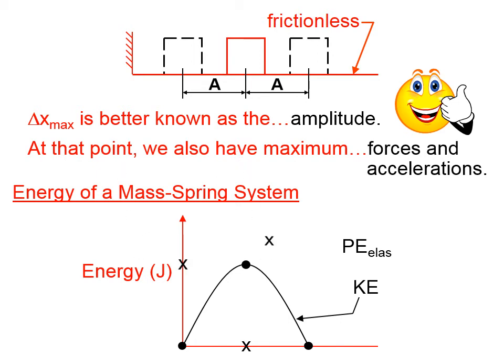When the mass is on the extreme left, or on the extreme right, there is some tension in the spring. When the mass is on the extreme left, the spring is squished. When the mass is on the extreme right, the spring is stretched.